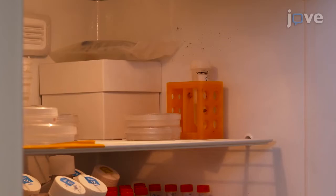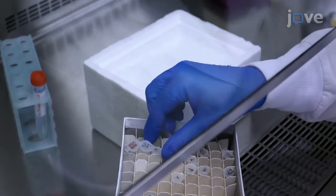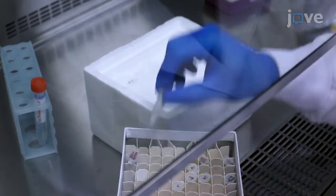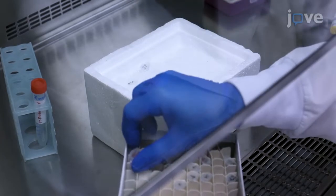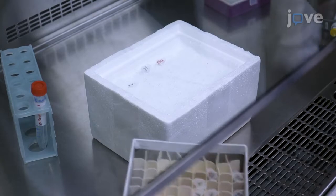Store the culture dish at 4 degrees Celsius until the cells are ready for seeding. Then, slowly thaw one 50 microliter aliquot of basement membrane extract and one 10 microliter aliquot of thrombin on ice in the culture hood.